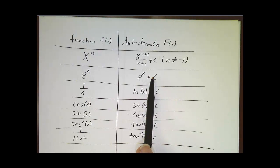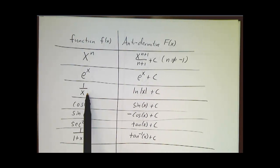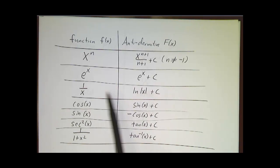Antiderivative of e to the x, e to the x plus a constant. Antiderivative of 1 over x, natural log of x. If x is positive, natural log of x. If x is negative, natural log of minus x. If x is anything, natural log of absolute value of x.